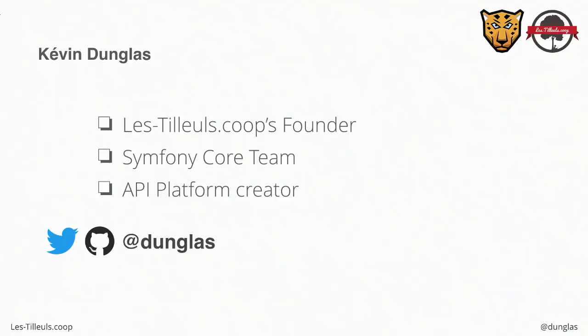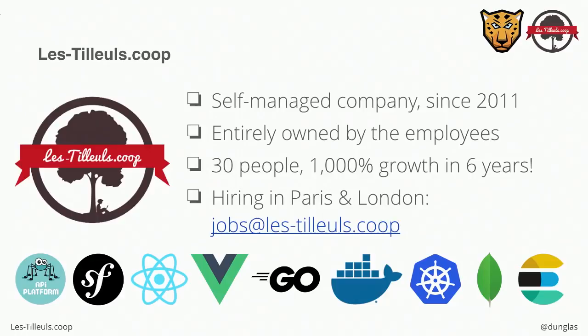We will not speak about API Platform in this talk. I work at Les-Tilleuls.coop. It's a French company that is still looking for people in London — so if you want to learn French with a beautiful northern accent, drop me a mail. It's a special company because it's a worker cooperative, which means the company belongs to all the employees only. All the benefits are shared equally between employees at the end of the year, and all decisions are taken in a democratic fashion.